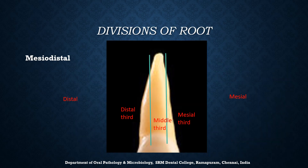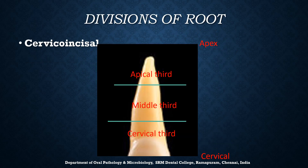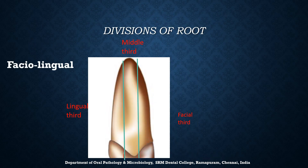Now we will see the divisions of the root. Viewing the labial surface of the anterior root from the mesiodistal direction, it can be divided into mesial third, middle third, and distal third. For posterior teeth mesiodistally, it can similarly be divided into mesial third, middle third, and distal third. In the cervico-apical direction, it can be divided into cervical third, middle third, and apical third. Faciolingually, the root can be divided into facial third, middle third, and lingual third.